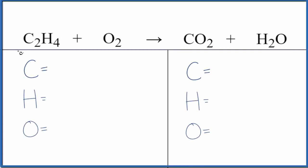Let's balance the chemical equation C2H4 plus O2. This is ethene plus oxygen gas. We'll also look at the type of reaction and the states for each of these substances.